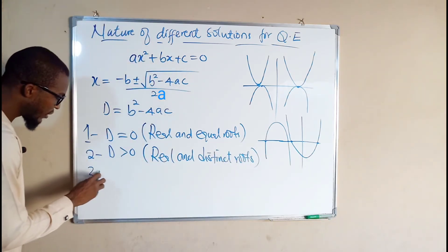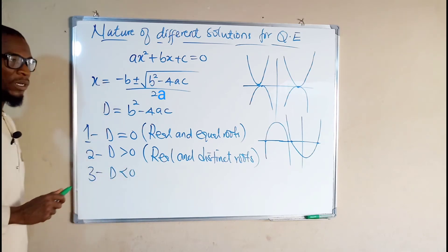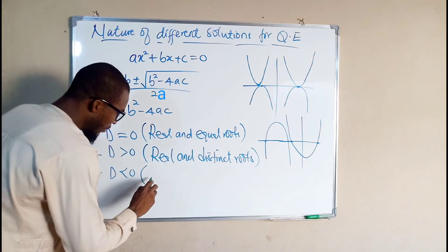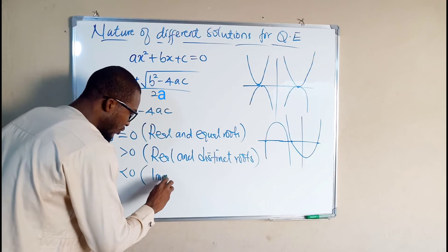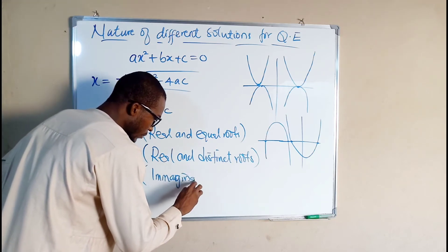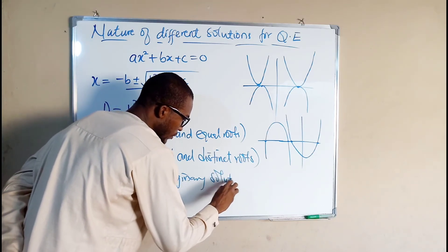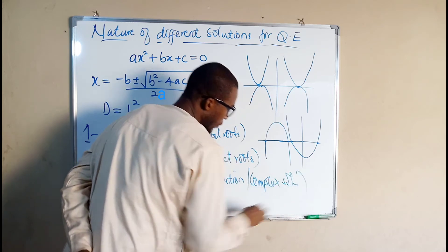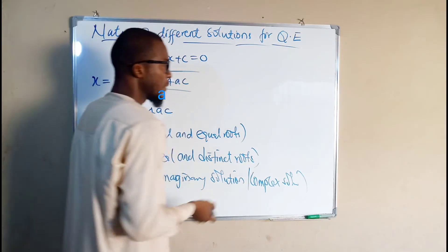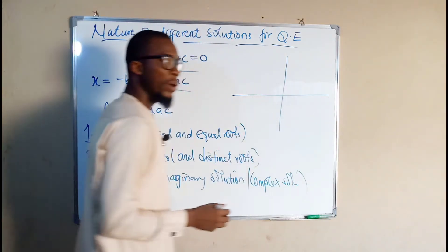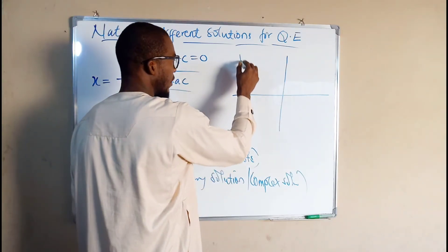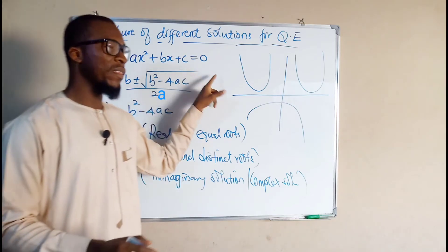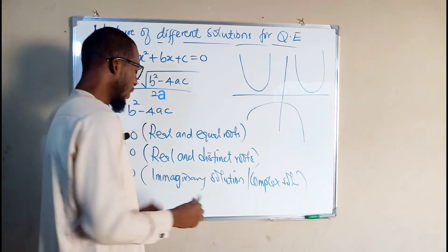And the last one, number three: if d is less than zero, this means that after simplifying, the value you obtain is negative. We say the solution is imaginary — an imaginary or complex solution. For example, suppose you have a graph where the parabola goes entirely without touching the x-axis. We say that that quadratic equation has an imaginary root.